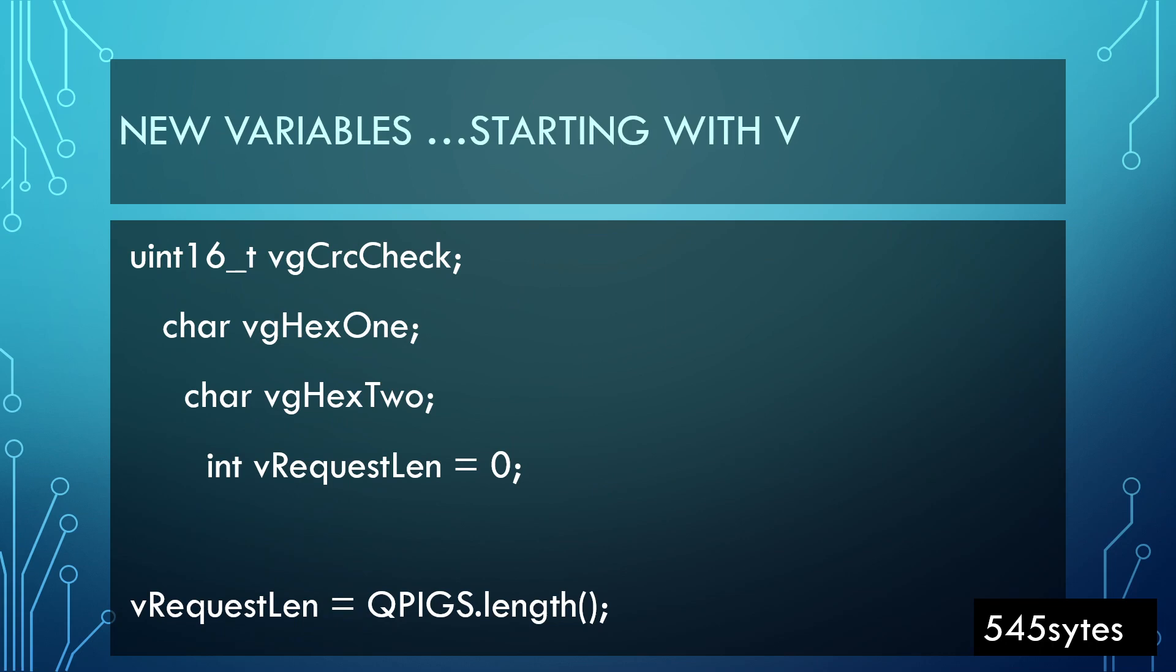Let's start talking about the new lines in the code. There are a few new variables and anything that starts with a V in the new code is a variable. I could have defined this request length as five over here because QPIGS is five characters, but you may need to use this code with other commands, so I have declared this as a variable and moved the QPIGS string length to this.